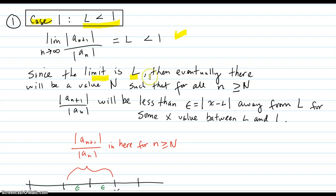Since the limit is L, that means something from the definition of what a limit is. It means that eventually there will be a value capital N such that for all the little n, little n, beyond that n, capital N, the ratio will be less than epsilon away from L, for some x value between L and 1.